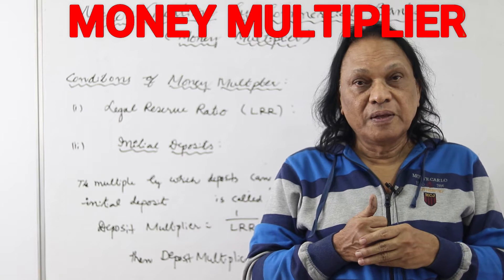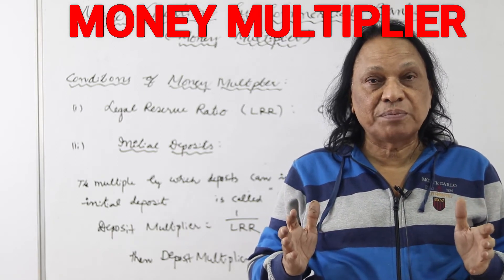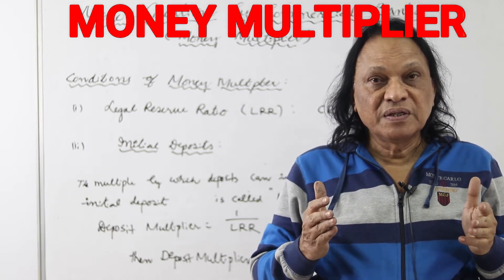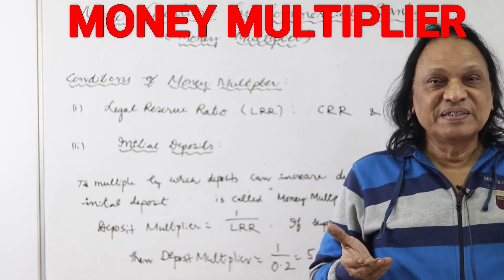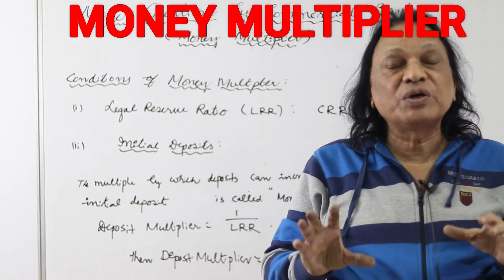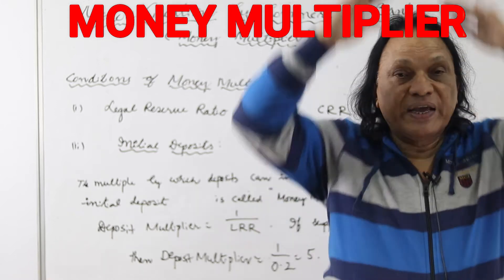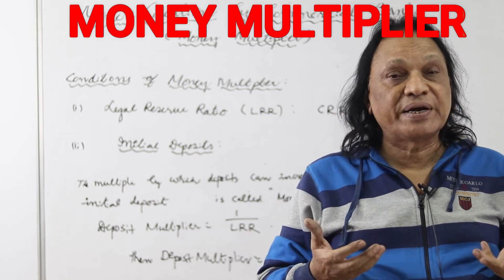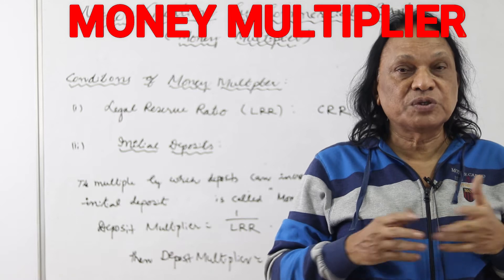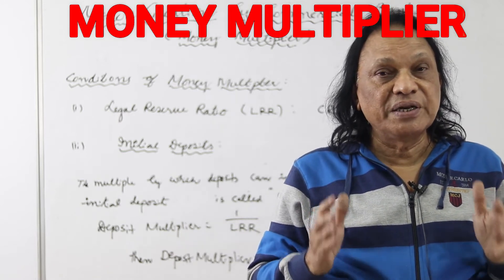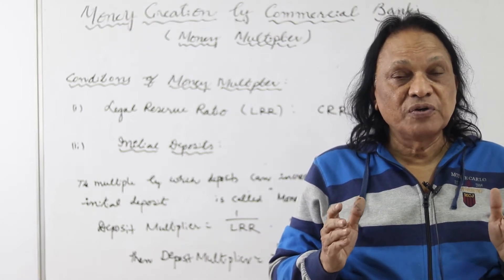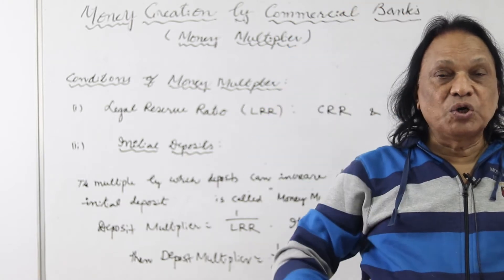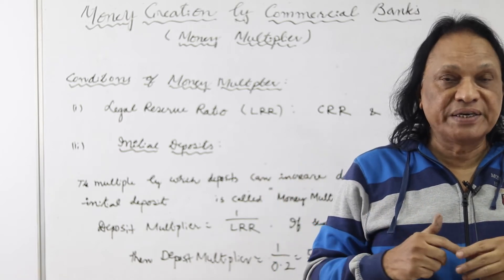If LRR is high, the credit creation capacity of commercial banks will be low. For example, if LRR is 80%, banks can create loans or credit of only 20% of the deposits they have. If LRR is low — say 10% — the banks have 90% available to create as credit. So if LRR is high, credit creation is low; if LRR is low, credit creation is high.